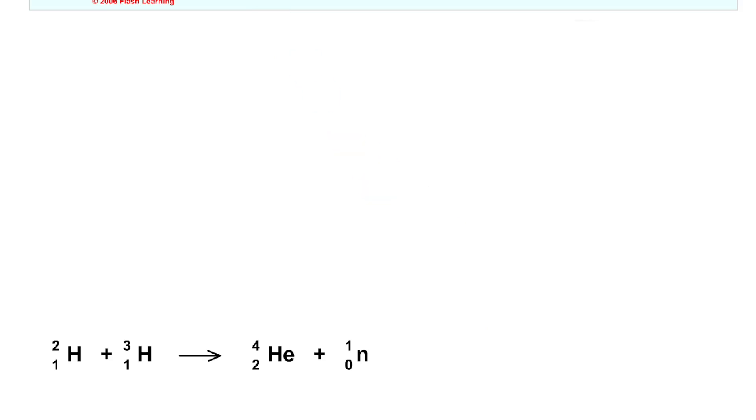there to produce helium and a neutron is fired off. So I'll just show you that again. So we have our deuterium and tritium nuclei joining or fusing together with energy being released in the form of the neutron that's carrying away that energy.